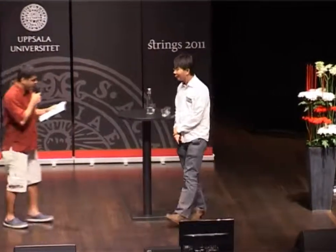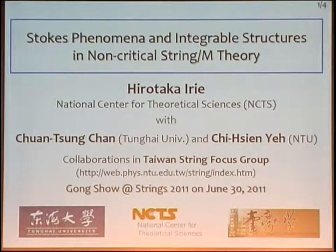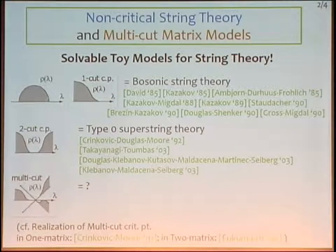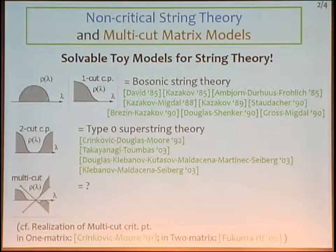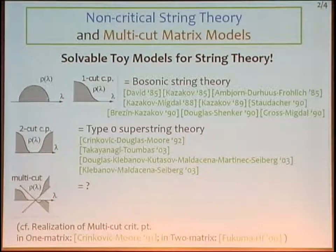Our next speaker is Hiroshi Ka-Irie from NCTS, Taiwan, with a talk on 'Stokes Phenomena and Integrable Structures in Non-Critical String Theory and M-Theory,' done in collaboration with Chan-Zong-Chan and Jishen-Yie. Our work is about non-critical string theory and the multi-cut matrix model. In general, non-critical string theory appears in the double-scaling limit of matrix models: if the critical point has one cut, it corresponds to bosonic string; two cuts corresponds to type II superstring theory. The natural question is: what kind of string theory corresponds to multi-cut critical points? We propose the answer is fractional superstring theory — a generalization of string theory on a worldsheet with bosons and parafermions.